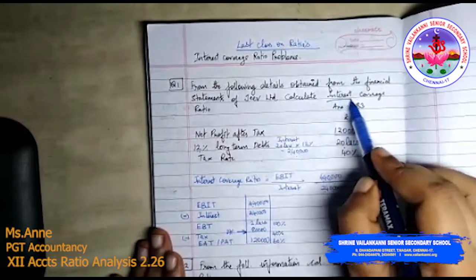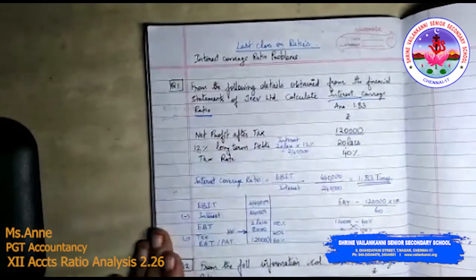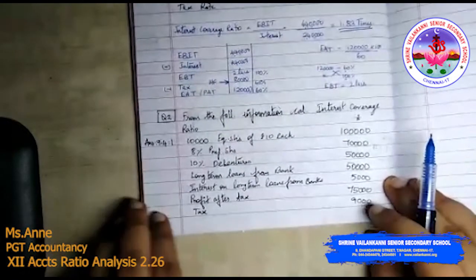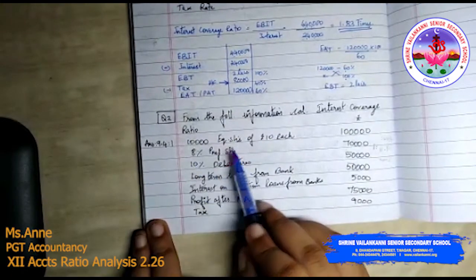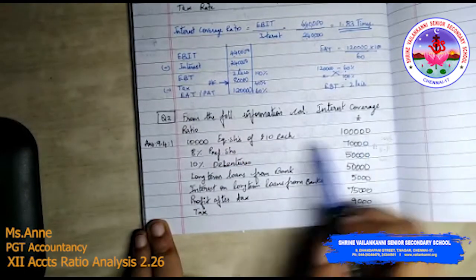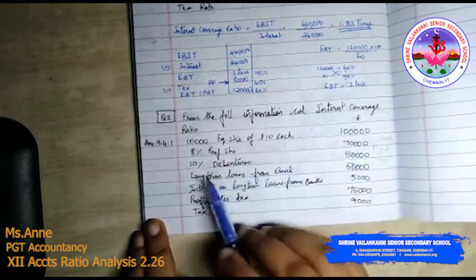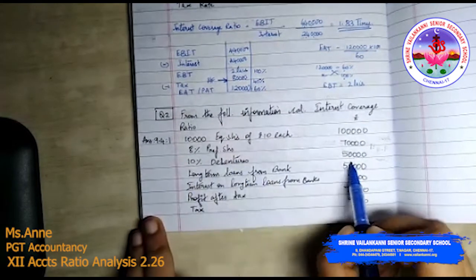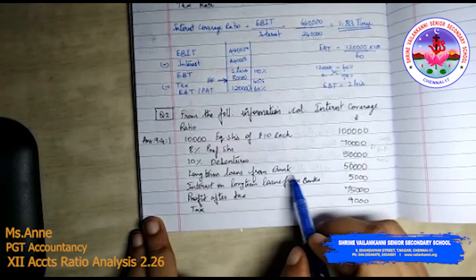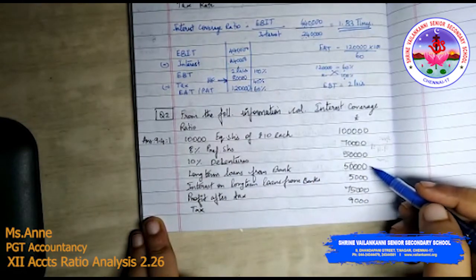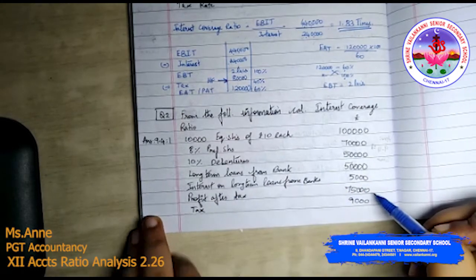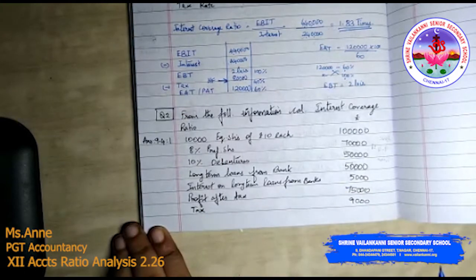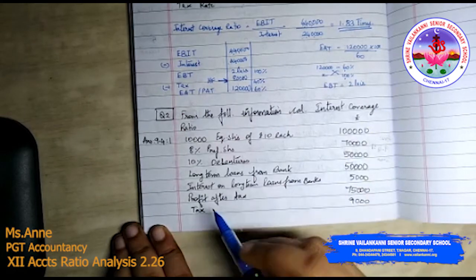Interest coverage ratio alone you can express in times. Next question: from the following information, calculate interest coverage ratio. 10,000 equity shares of 10 each — 1 lakh; 8% preference shares — 70,000; 10% debentures — 50,000; long term loans from bank — 50,000; interest on long term loans from bank — 5,000; profit after tax — 75,000; tax — 9,000.